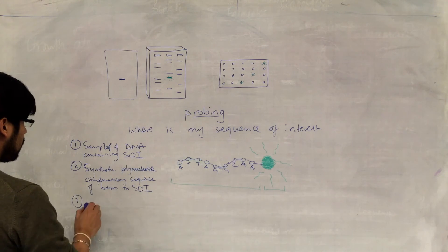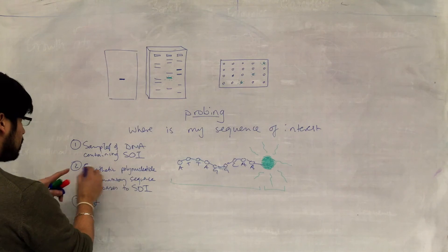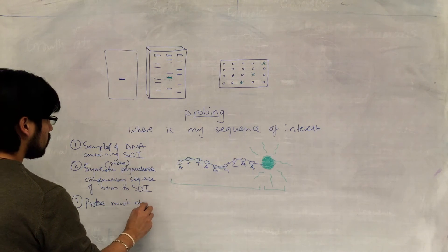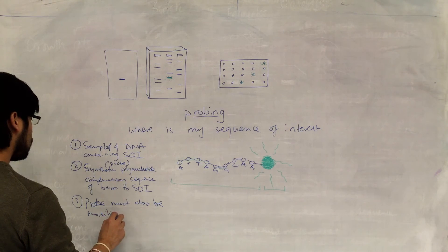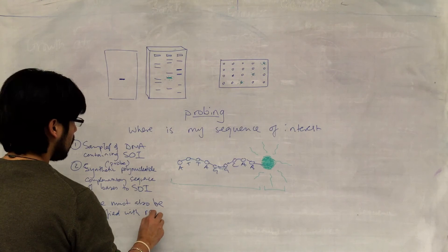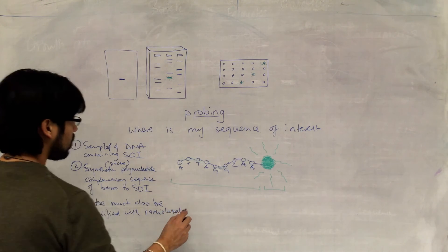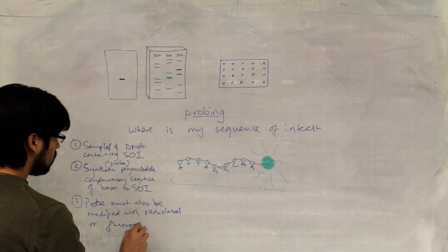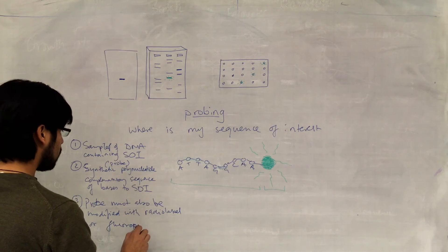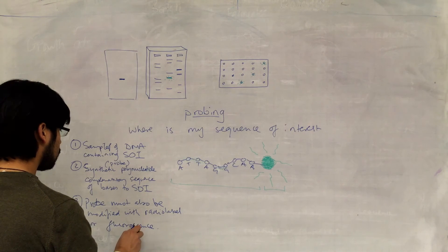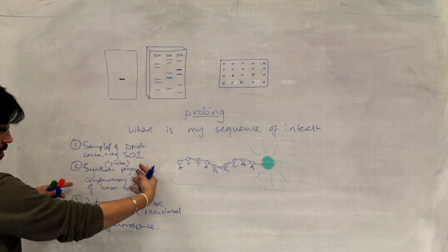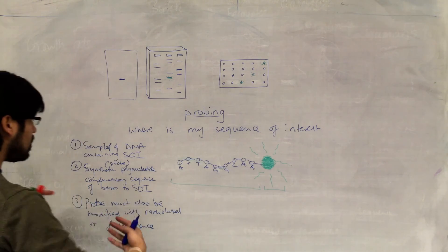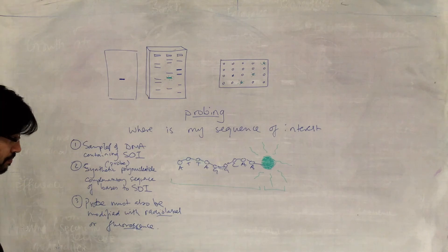Three. The probe, so this is the probe, the probe must also be modified with either a radio label, i.e., it emits radioactivity, so with radio label, or a fluorophore, so it's emitting fluorescence. It has to be able to bind to your sequence of interest, and once it's bound, you must be able to detect where it's bound, so it needs to be modified with a radio label or fluorescence.